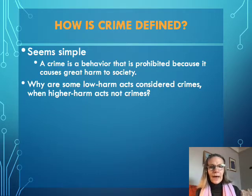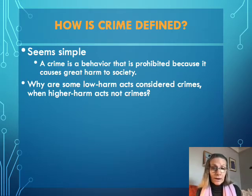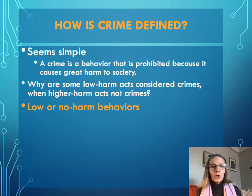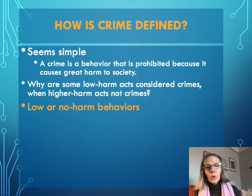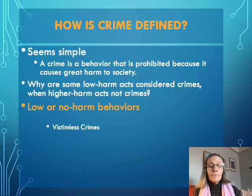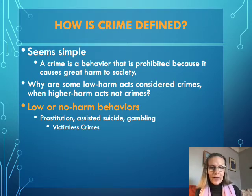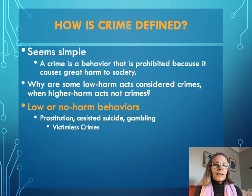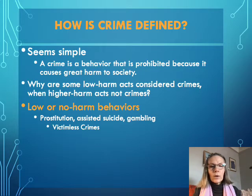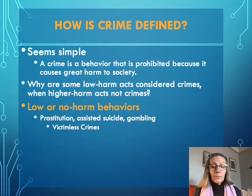But it's not quite that simple. Some actions are low-harm but are considered crimes, while other high-harm actions are not considered crimes at all. Here are some examples of low or no-harm behaviors that are oftentimes criminalized. These are sometimes referred to as victimless crimes — there's no victim, nobody is being hurt. Things like prostitution, assisted suicide, or gambling don't cause a lot of obvious harm.